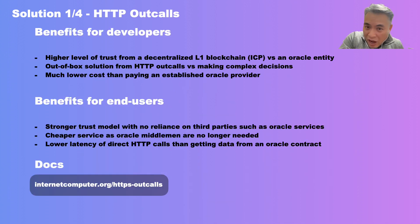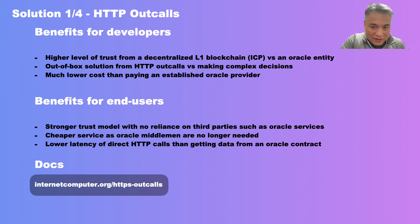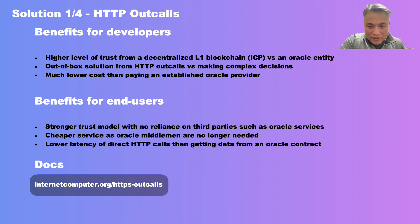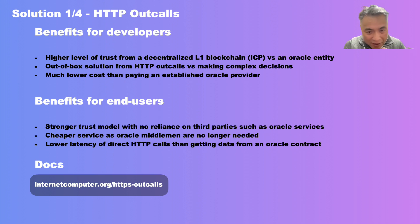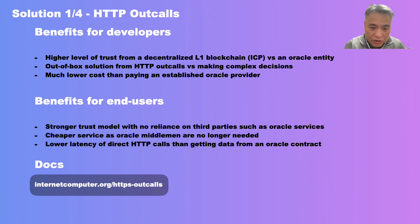The canister can then resume the original smart contract call and safely use the HTTP response to change its state without risking divergence across replicas. Essentially, HTTP Outcalls can do what blockchain oracles do now. As a developer you get a higher level of trust — choosing between a decentralized layer 1 blockchain network versus trusting an independent oracle entity. You also get out-of-box solutions and don't need to make complex decisions about choosing between single or multiple oracles. For end users, service will be cheaper because the oracle middleman is no longer needed. Overall, HTTP Outcalls achieve what oracles do, but in a much more robust, decentralized fashion.